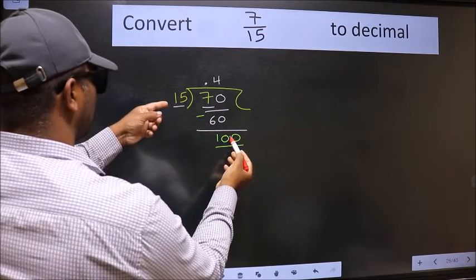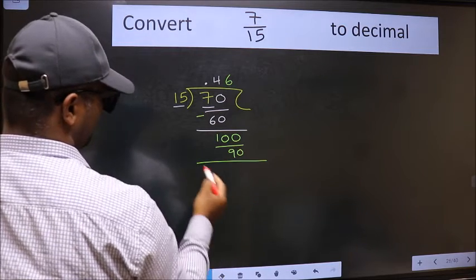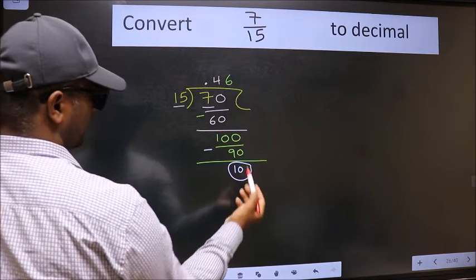So, 100. A number close to 100 in the 15 table is 15 sixes, 90. Now, we should subtract.